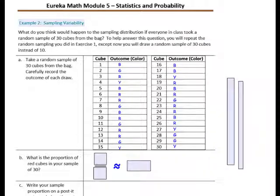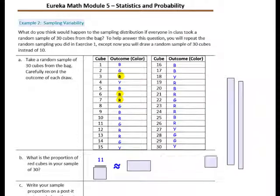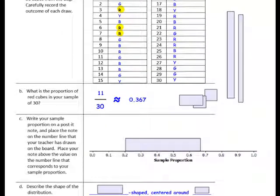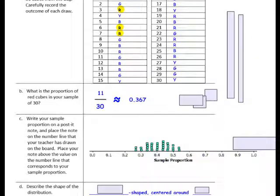What is the proportion of red cubes in your sample of 30? Pause the video and find the proportion of red cubes — you'll want to highlight all of the reds and count them. The proportion is 11 red out of 30. 11 divided by 30 is 0.367. Write your sample proportion on a post-it note and place the note on the number line that your teacher has drawn on the board. The data plot we're looking at next shows every student's proportion, so go ahead and pause the video and copy that onto your paper.